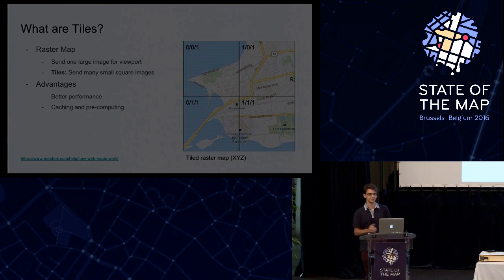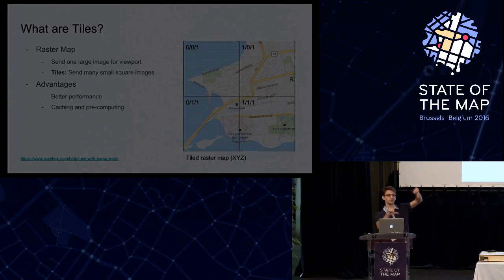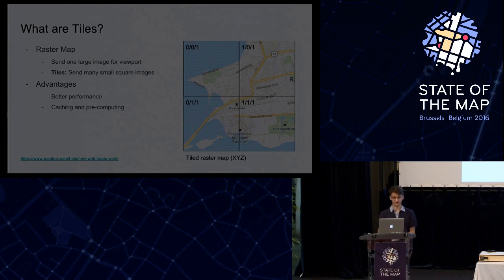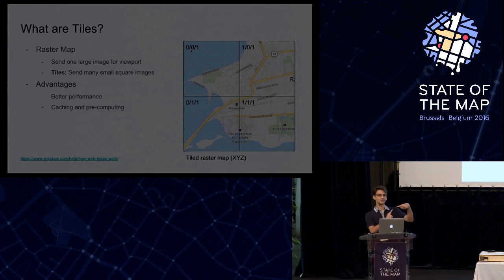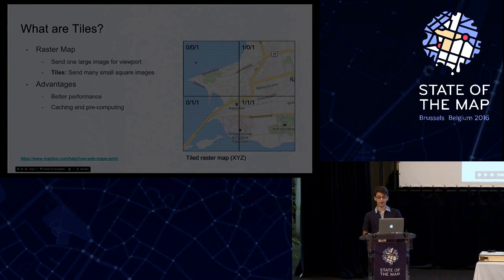In the earlier days, like 2005, when you browsed a web page with a map, you just got one large image, and each time you scrolled you got another large image. Then Google came up with the idea to slice that large image into many small square images — tiles. This gives you better performance because it loads many small tiles. One tile always covers exactly the same area, so you can pre-compute and cache it. You can render a map once and always request it without re-rendering.